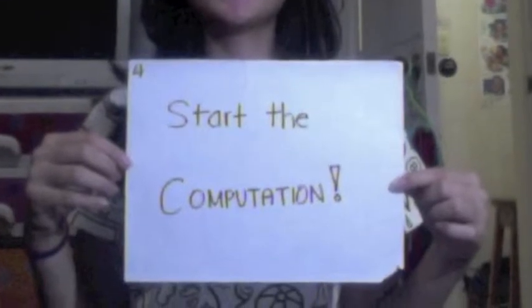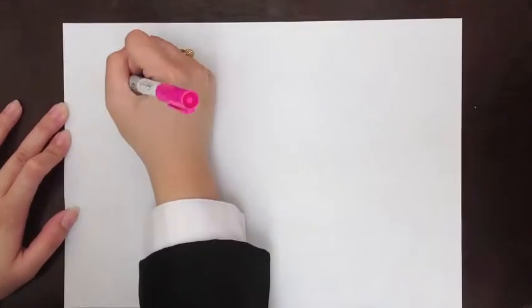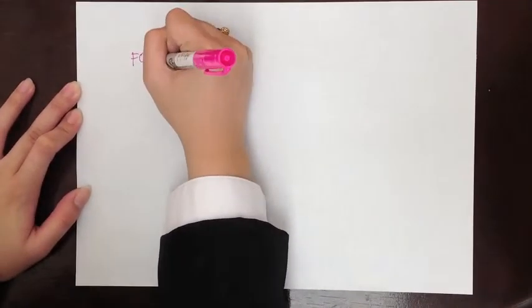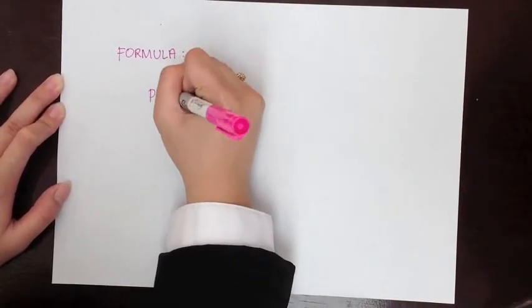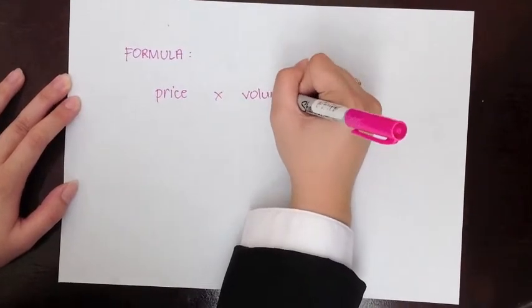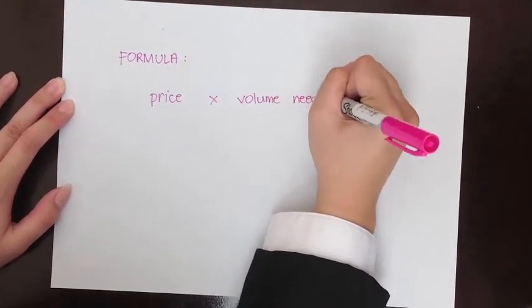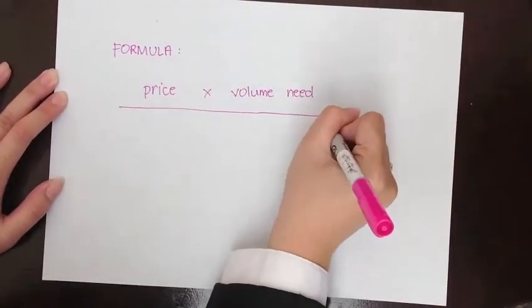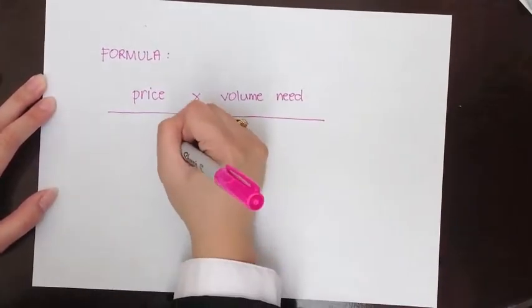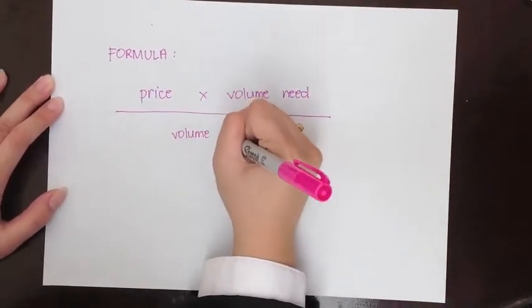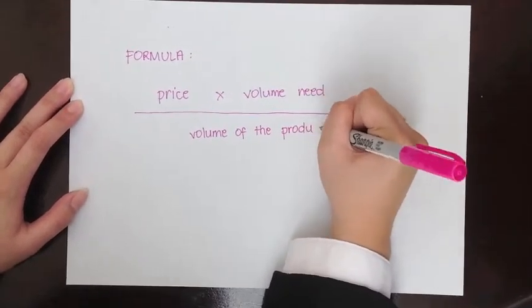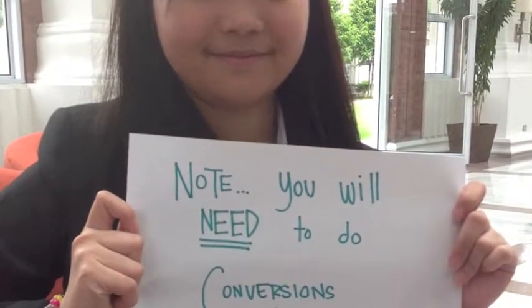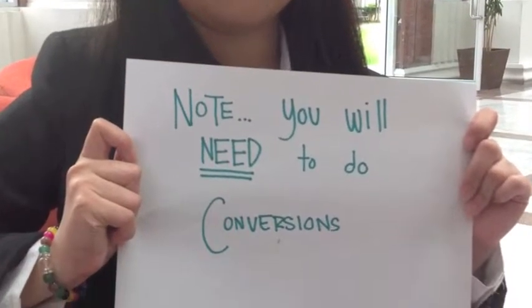Note: we are going to do some conversions. Here is the formula to know how much each ingredient would cost per serving: the price of the product multiplied by the volume needed stated in the recipe, divided by the volume of the product bought from the market. Please take note that you will need to do conversions — you can search for conversions online.